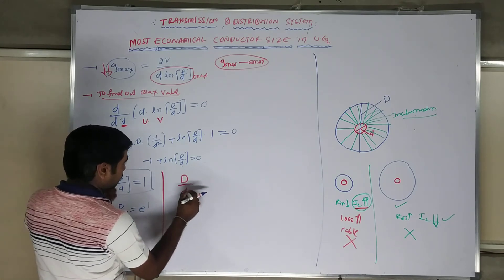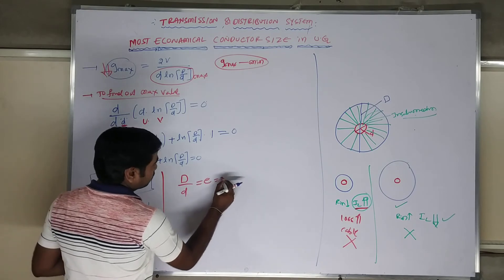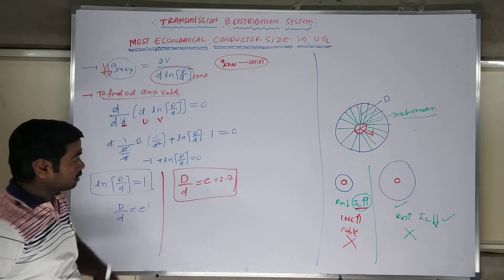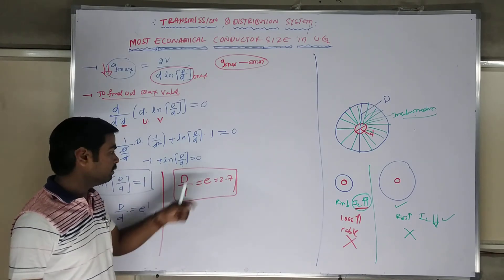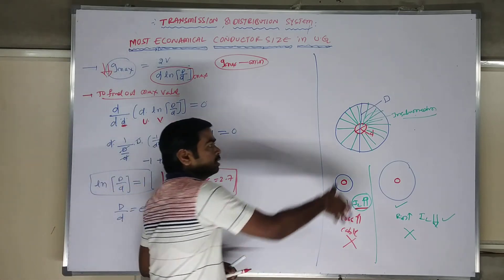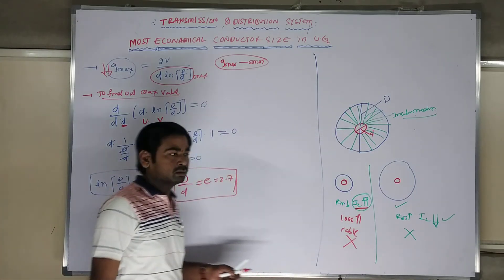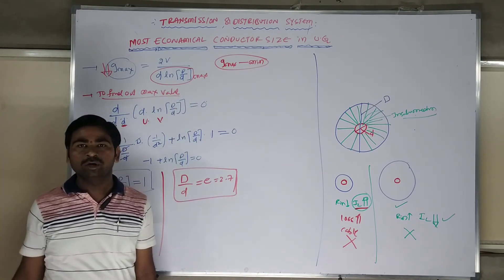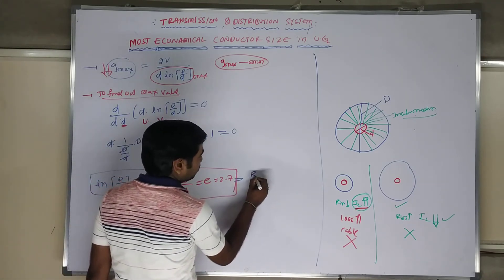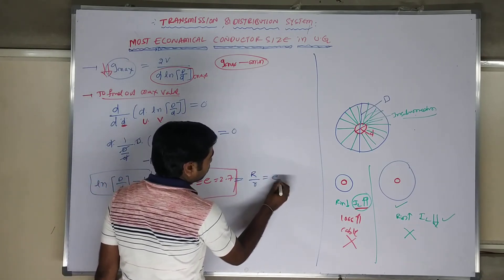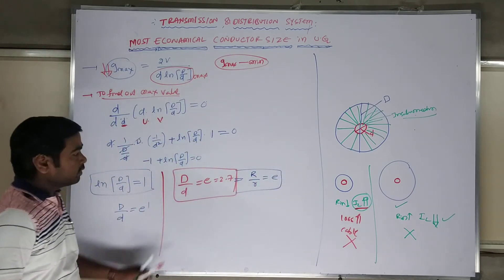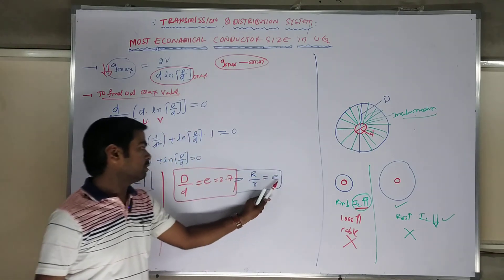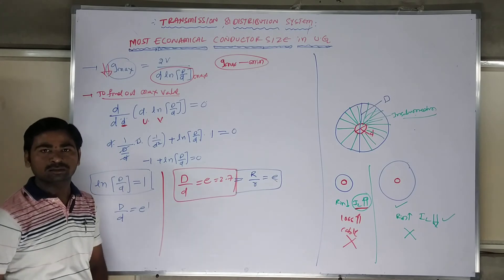What we are getting here? The small d by capital D, the ratio it becomes a small e value is equal to 2.7 something else. So the relation, the ratio between small d by capital D is equal to - if you maintain equal to e, it means the diameter of the sheath to the diameter of small conductor size, that equal to 2.7. If you maintain such a ratio, you are getting a conductor size with economical manner. Once you continue in the environment, the radius of that way is small radius equal to e, that also is correct. This is the factor when you go for most economical conductor - the ratio of this, it should be equal to this small e value. The economical conductor size will be correct.